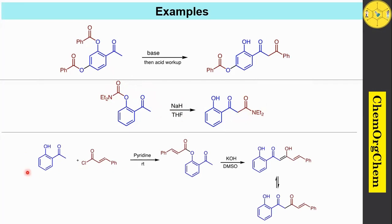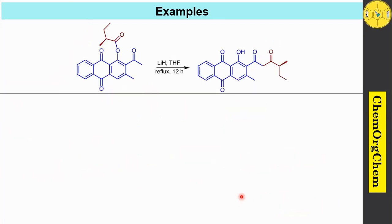In another example, this compound reacts with cinnamoyl chloride in the presence of pyridine, which produces this corresponding product. When you use potassium hydroxide and DMSO, it readily undergoes Baker-Venkataraman rearrangement to produce this intermediate. This intermediate is present in keto-enol tautomerism with this 1,3-dicarbonyl compound.